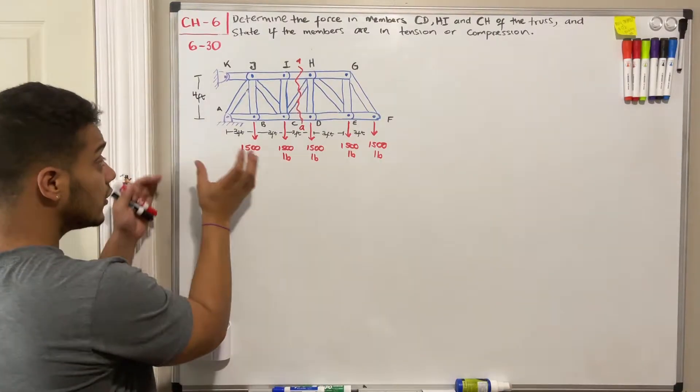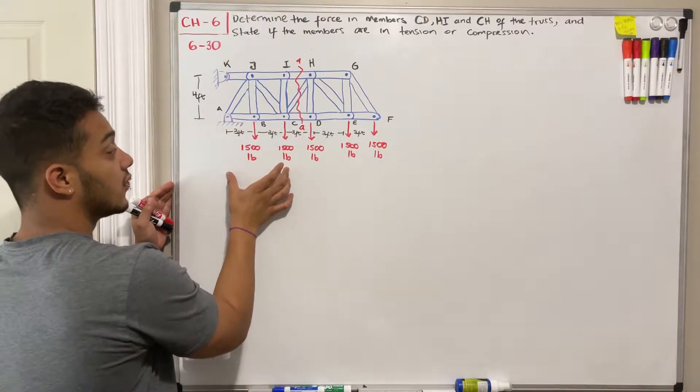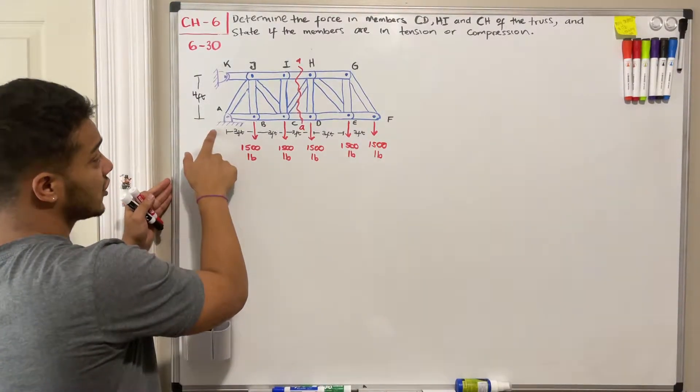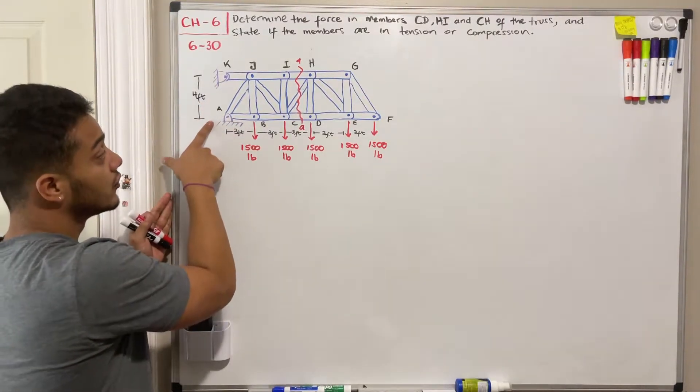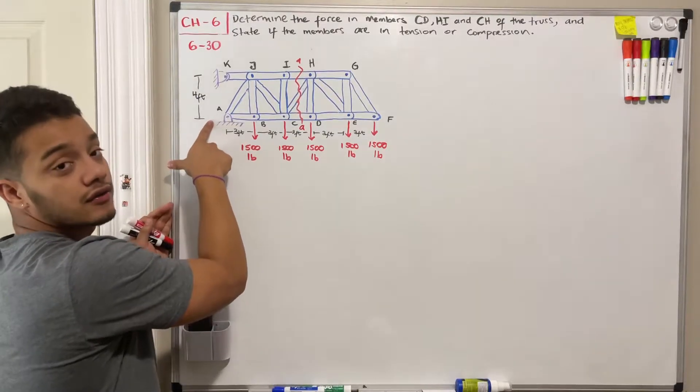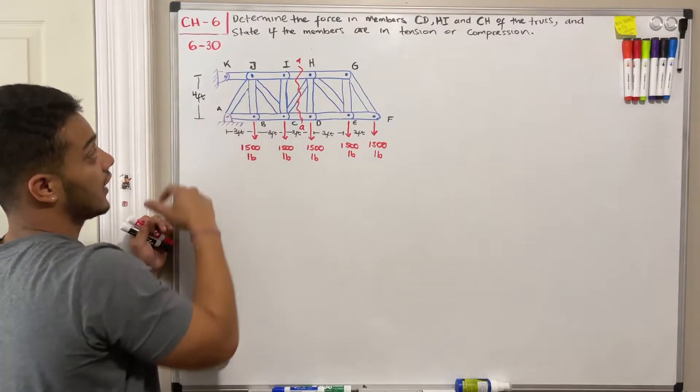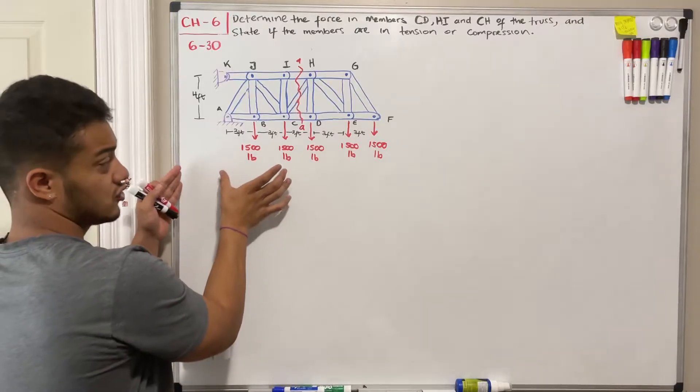So if we look at our left side of our truss, what do we have? Well, we got some pin connections at A and K. Therefore, we got two unknown forces. We don't know what the reaction forces at A and K are. Therefore, we don't want to choose this side.